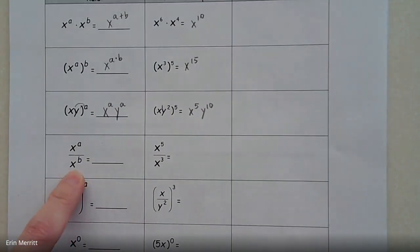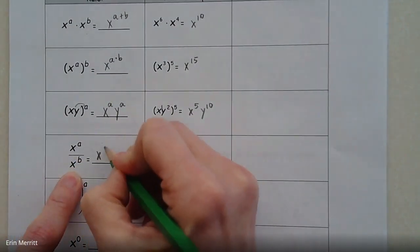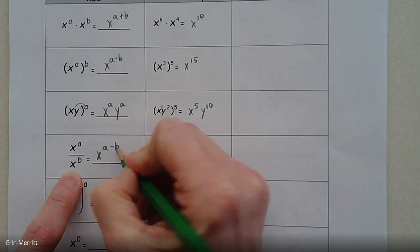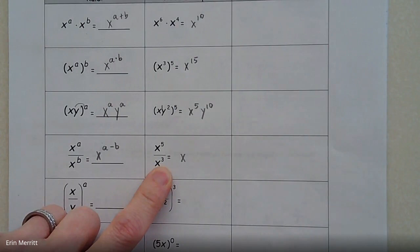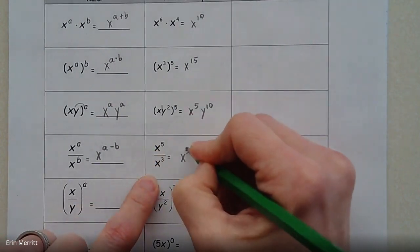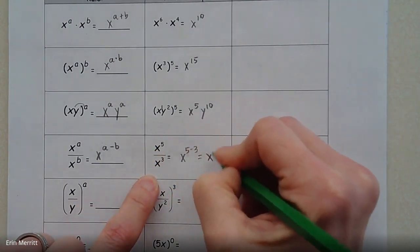All right, when we are dividing bases, we subtract the exponents. So a minus b. So in this case, we've seen a little bit of this in the past units. 5 minus 3 there, we would just get x squared.